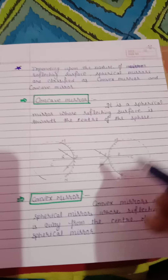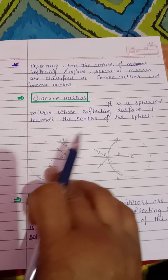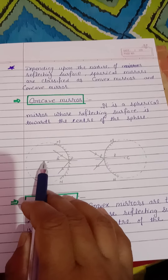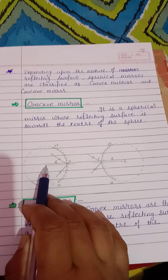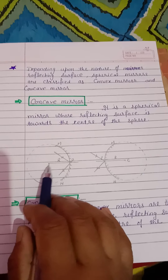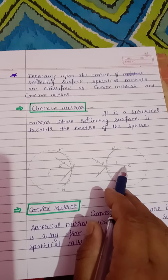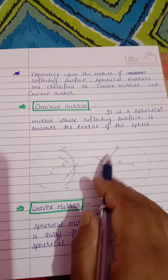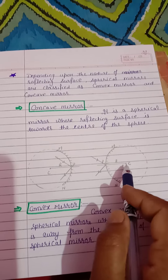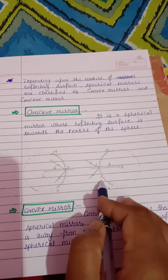Convex mirror: it is a spherical mirror whose reflecting surface is away from the center of curvature। जैसे देखो — इसका center यहाँ है, यहाँ पर इसका non-reflecting surface है और reflecting surface बाहर की side है — away from the center of curvature। Is that clear?